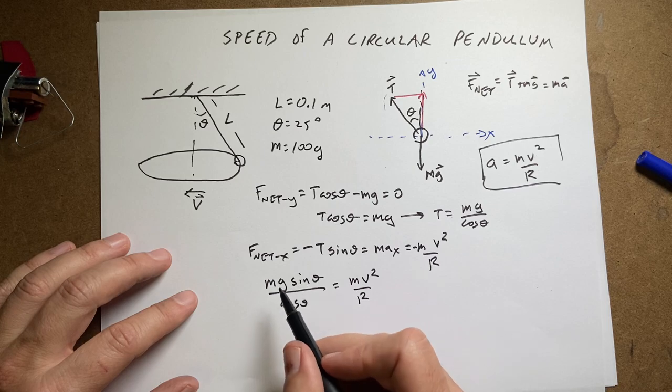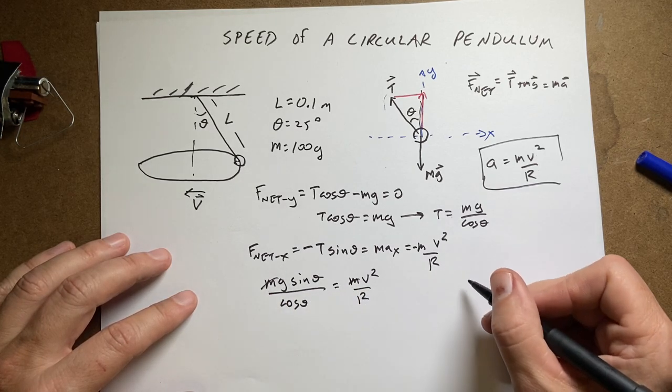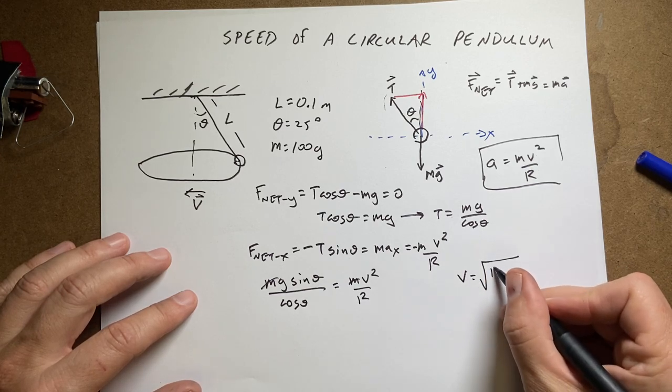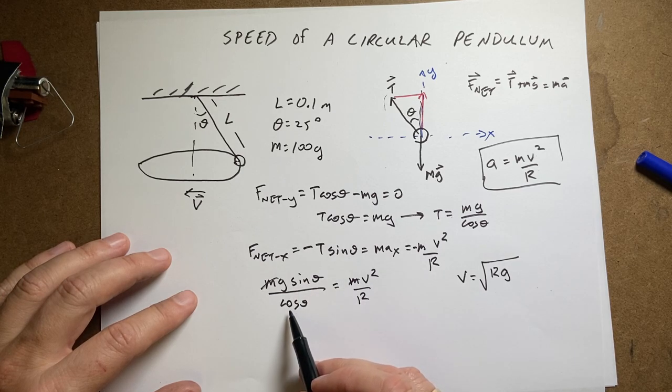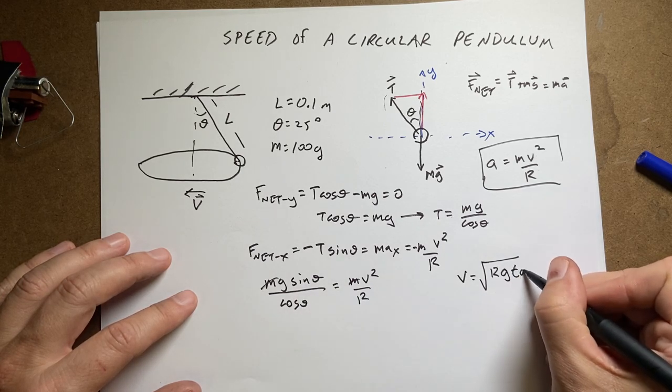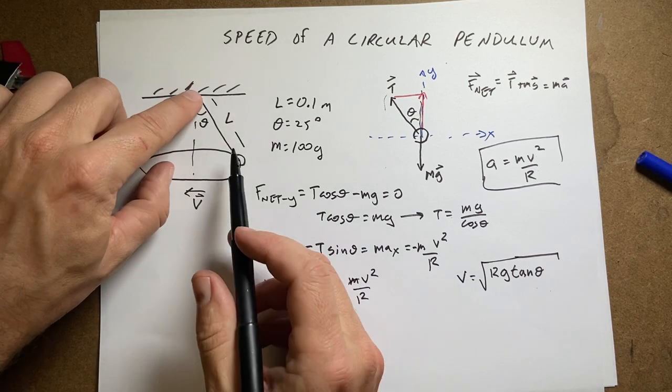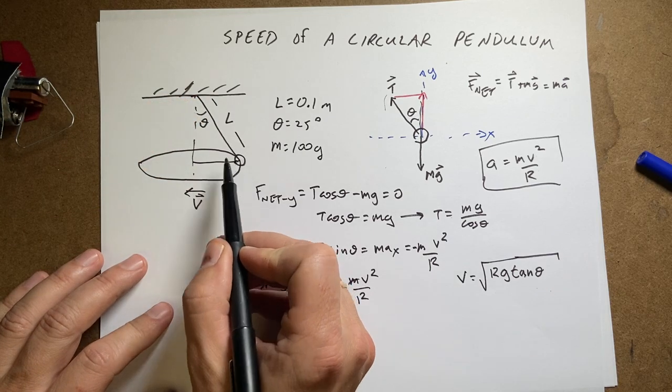Now I can solve for, these masses cancel. And I can multiply by R and take the square root. And I get V equals the square root of R G. And I have sine theta over cosine theta is tangent theta. Okay, but I don't, I know the length of this is 0.1 meters, but I don't know this R.